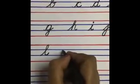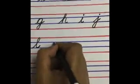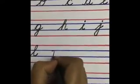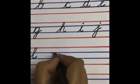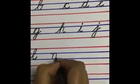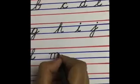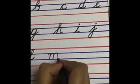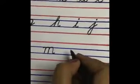Now from the second line, you will touch the third line, again touch the third line, again touch the third line. This is small letter M.